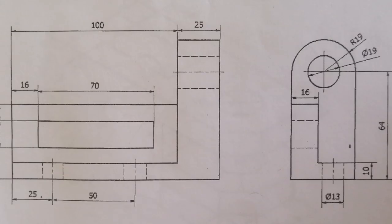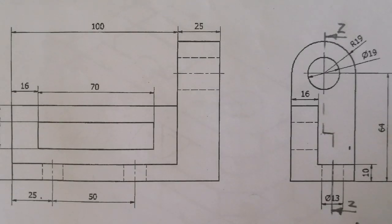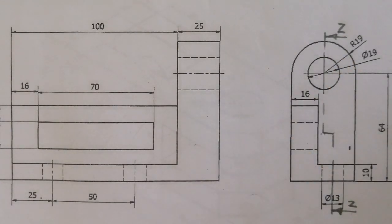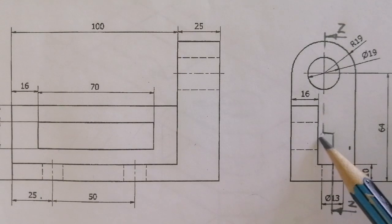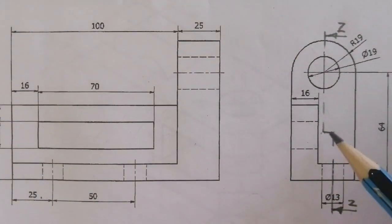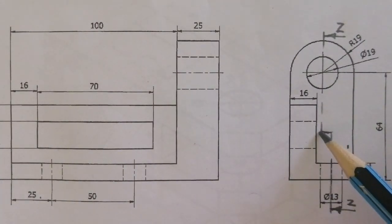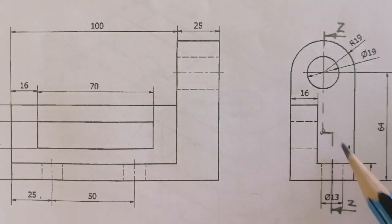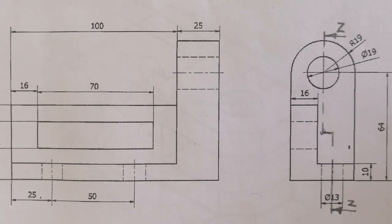Let's look at another example. This is a section line ZZ that I've just added, to be able to look at the section on this view here. This is now a full section — it just goes zigzag in order to be able to cut through all the holes. I'm having a hole there, going zigzag to be able to cut through this hole there. And first things first: it's a full section.